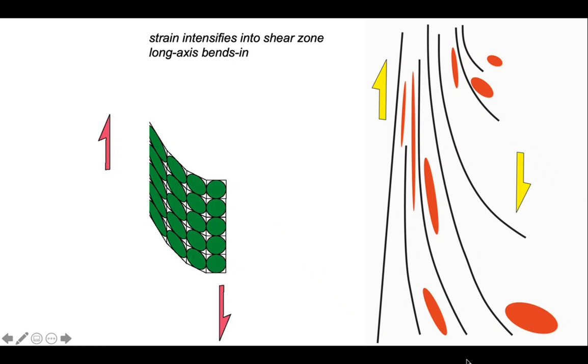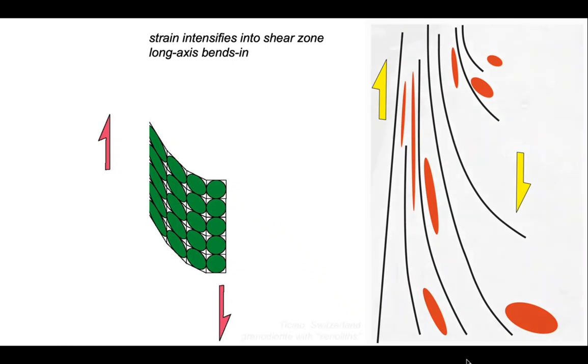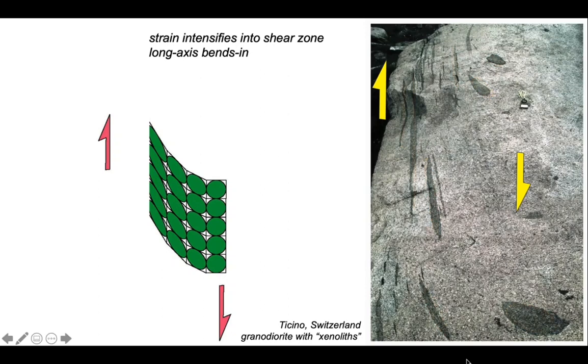So, the right hand side has moved down in our view, like that. So, if we look at our cartoon on our left, we can see that the long axis of the ellipses has bent into the shear zone. We can use the change in orientation of the shapes to establish the sense of movement on our shear zone.